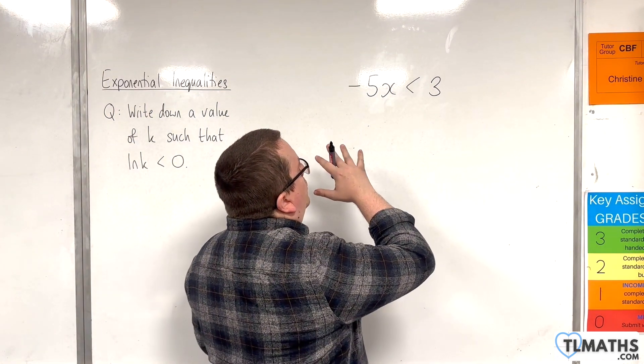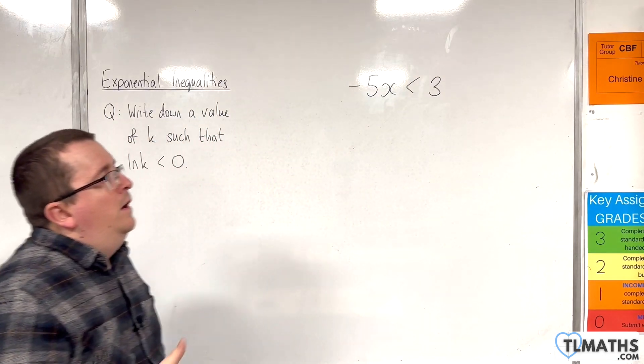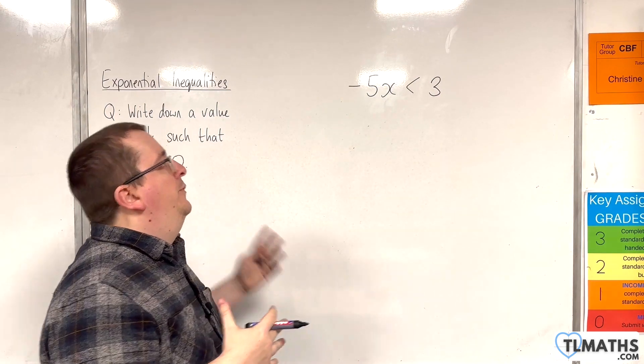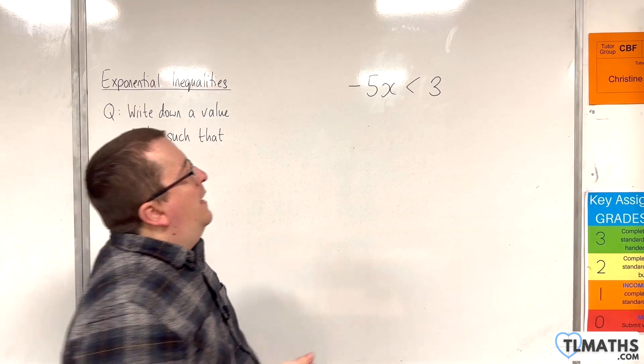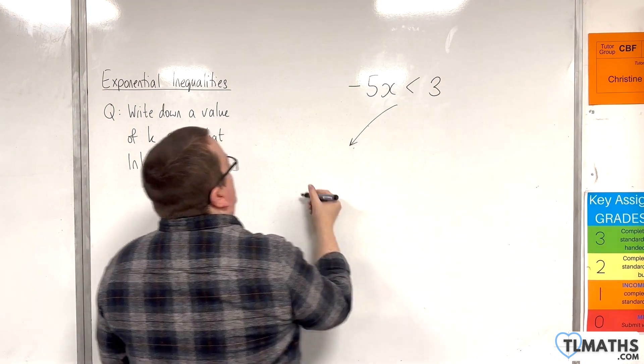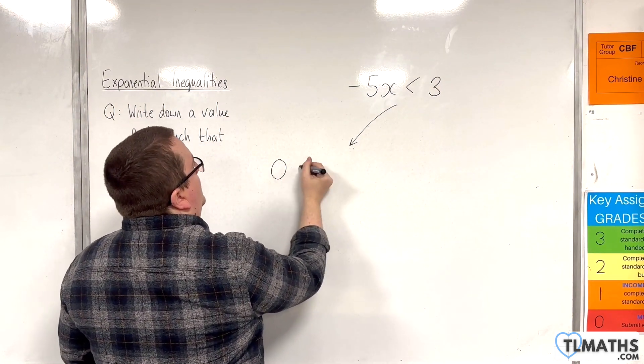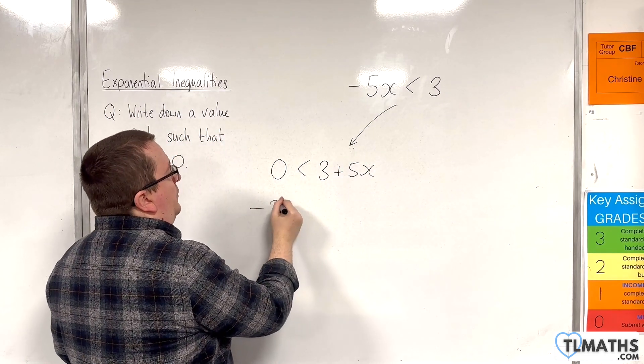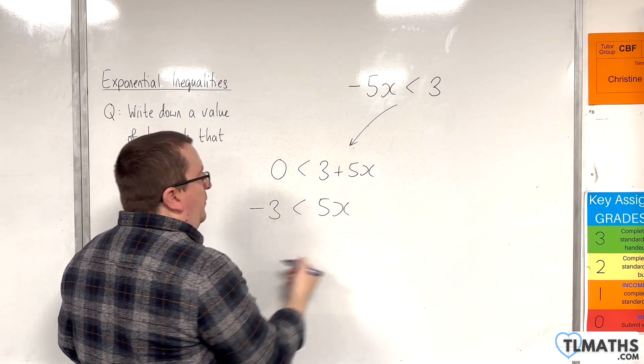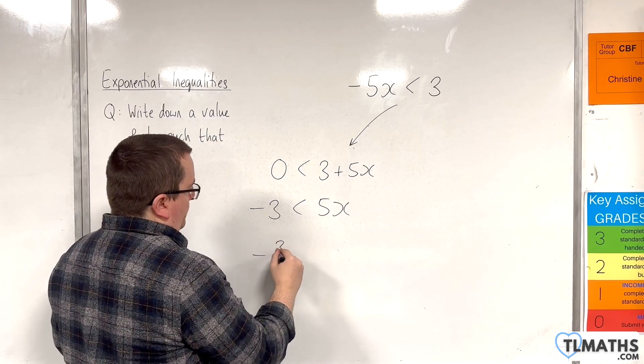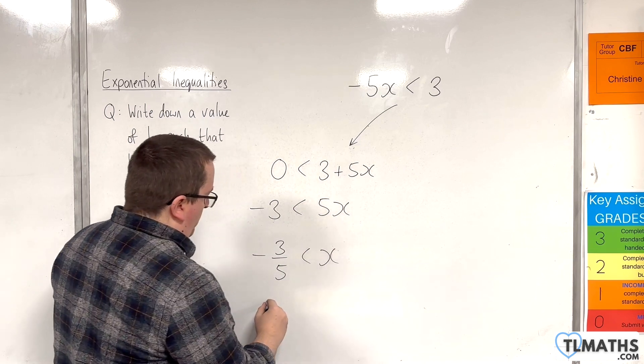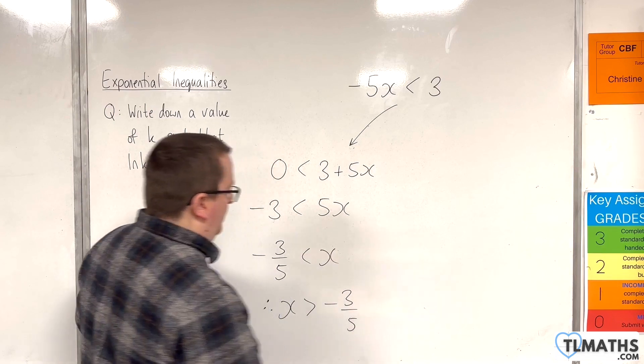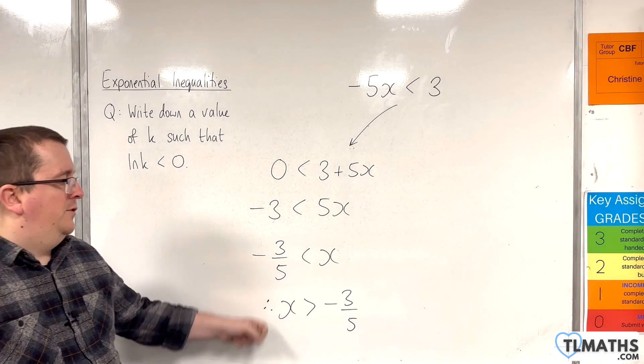Then, I could do this in one of two ways. I could either rearrange this. So, add 5x to both sides, subtract 3 from both sides, and do it that way. So, I could go and add 5x to both sides, and then subtract 3 from both sides, and then divide both sides by 5. So, therefore, x is greater than minus 3 fifths. Okay, these two statements are the same thing.